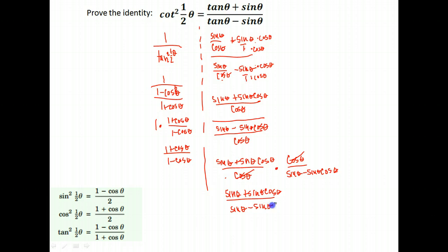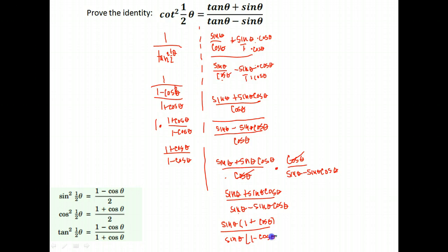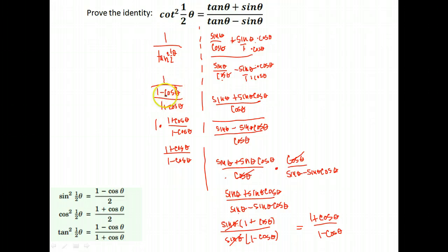Now I'm down to sine theta plus sine theta cosine theta over sine theta minus sine theta cosine theta. Notice I have sine in both terms on top and both terms on bottom. I can factor a sine out of the top, leaving 1 plus cosine theta, and factor a sine out of the bottom, leaving 1 minus cosine theta. Those sines cancel, and I'm left with 1 plus cosine theta over 1 minus cosine theta — the same thing I had on the left-hand side. Both sides equal 1 plus cosine theta over 1 minus cosine theta, and the identity has been proven.